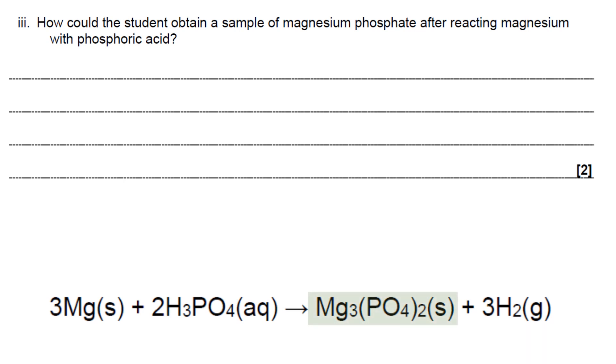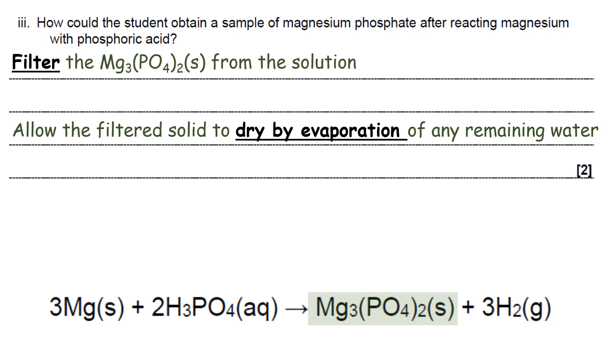So just reminding ourselves that it's a solid that's insoluble. The first thing you have to do is to filter that solid off. And then the second thing you do is you allow the filtered solid to dry by evaporation of any remaining water. And then you'll have your sample of magnesium phosphate.